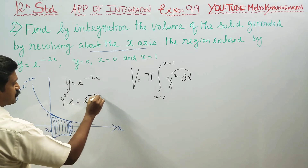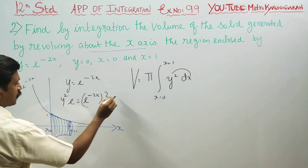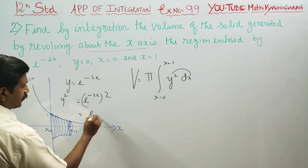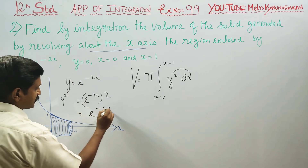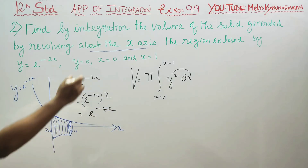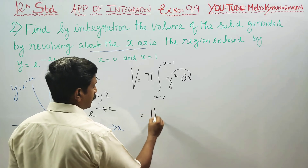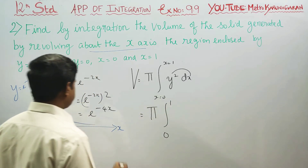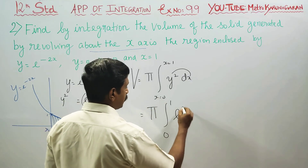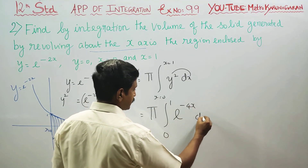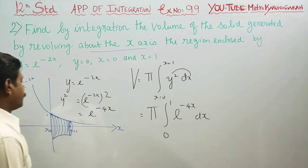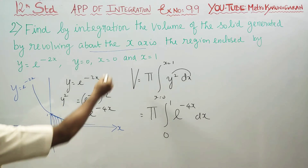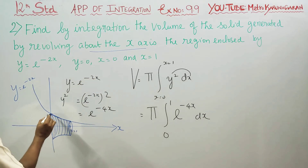Since y = e^(−2x), y² = e^(−4x). The volume formula for rotation about the x-axis gives: V = π × ∫ from 0 to 1 of e^(−4x) dx.